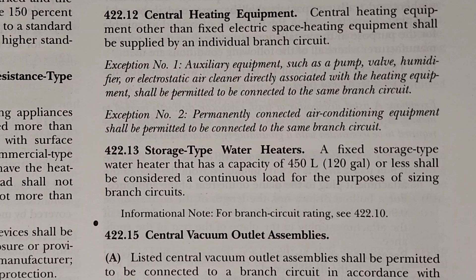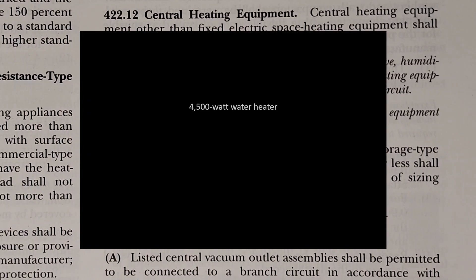Let's go ahead and take a real-world example. Let's imagine we have a 4,500 watt, 80-gallon tank and we're trying to figure out how to size the wire and the breaker. What we're going to do is take our 4,500 watts and divide it by our system voltage — in this case 240 volts. When we get that number, that's our starting value.